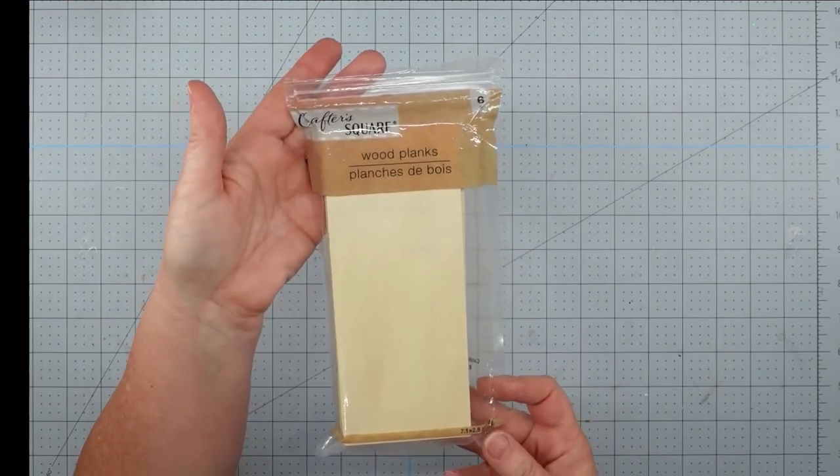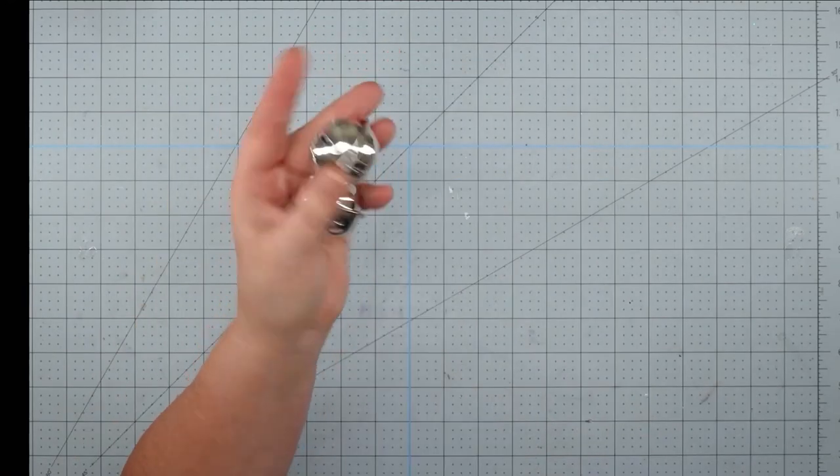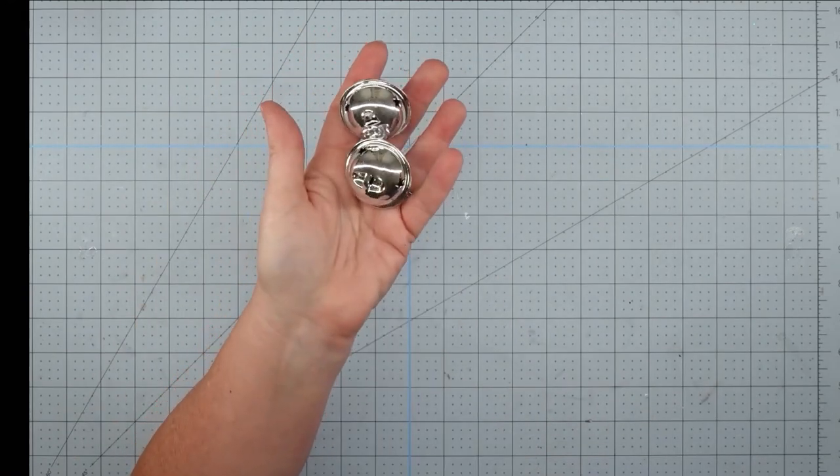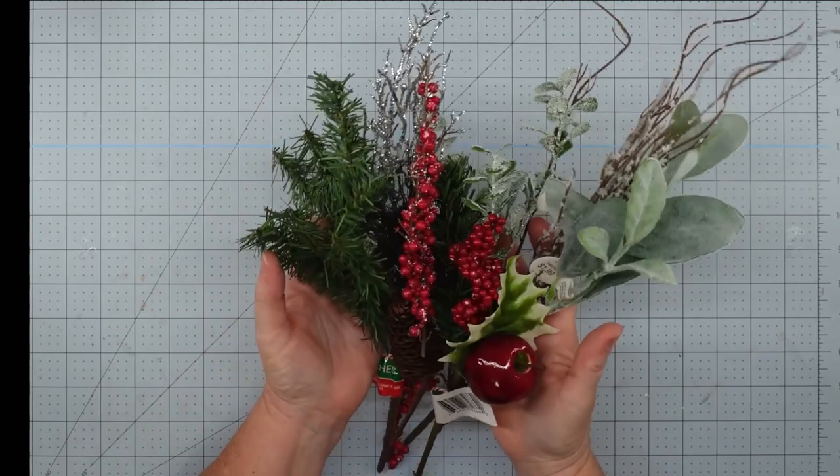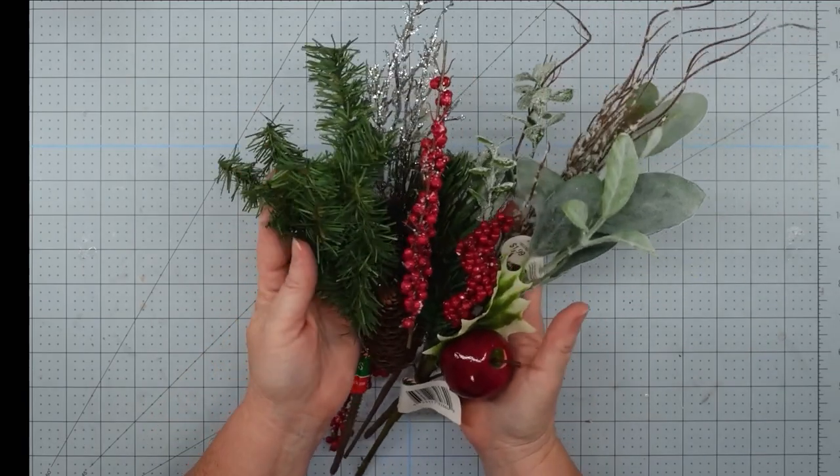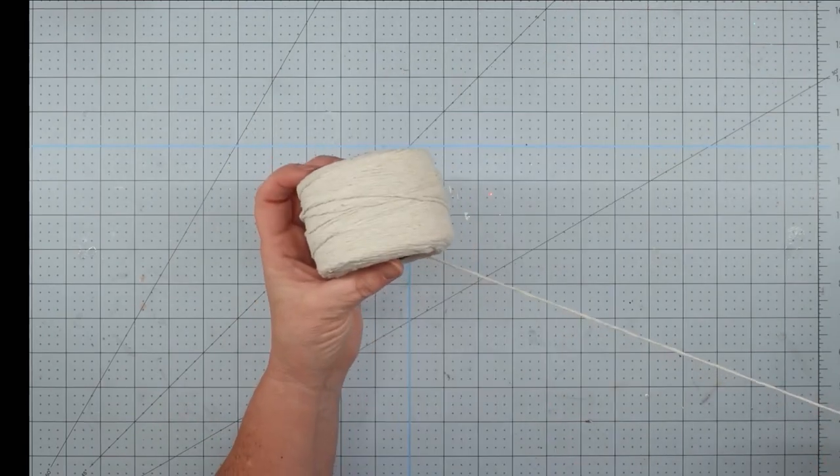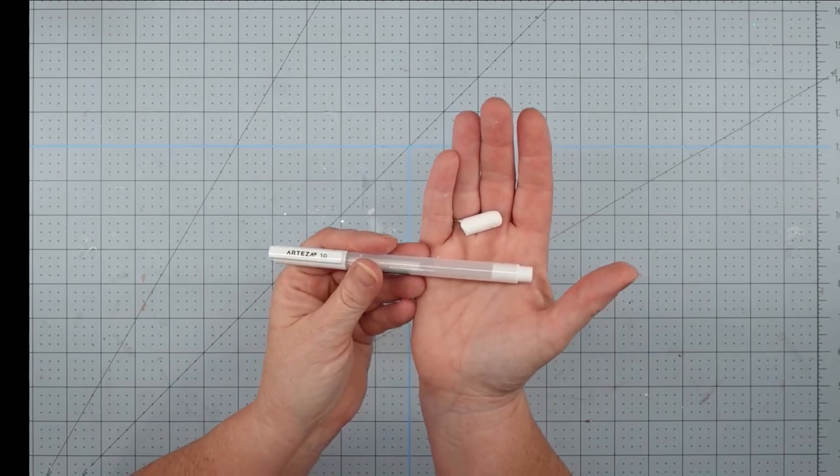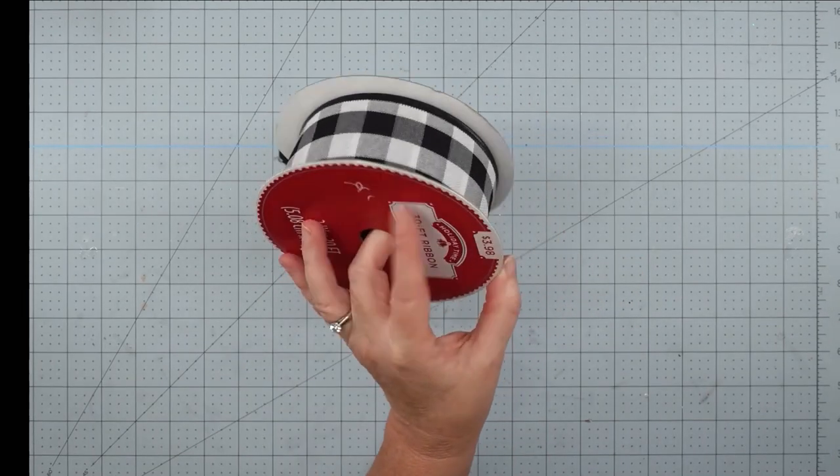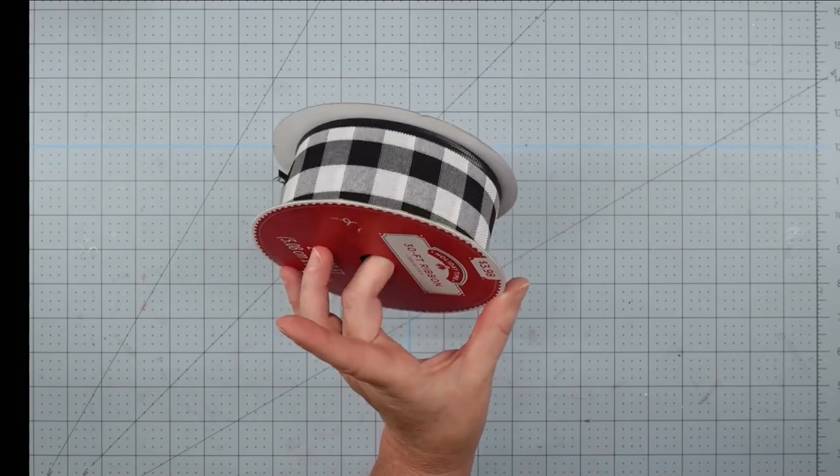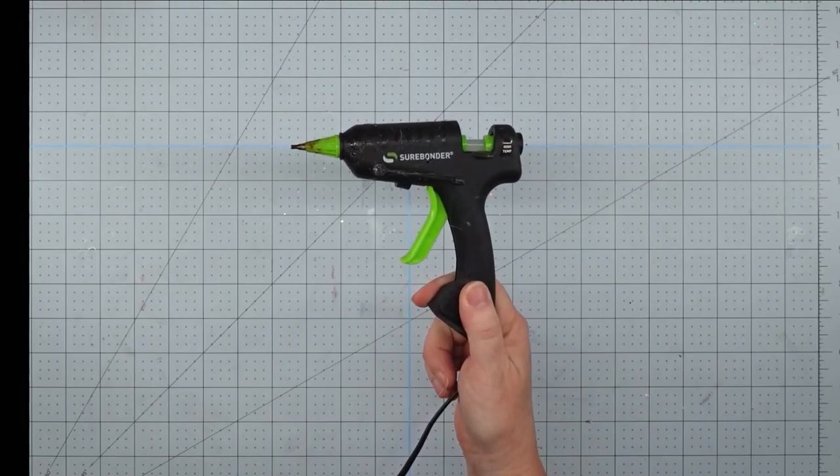A wooden plank from the Dollar Tree. A couple of jingle bells I had leftover from last year. I think they came from Dollar Tree. Some leftover greenery and berries that I had from last year. Some cotton twine from the Dollar Tree. A piece of chalk and a white Arteza gel pen. Some ribbon of choice. I got this from Walmart last year and my glue gun and some glue sticks.